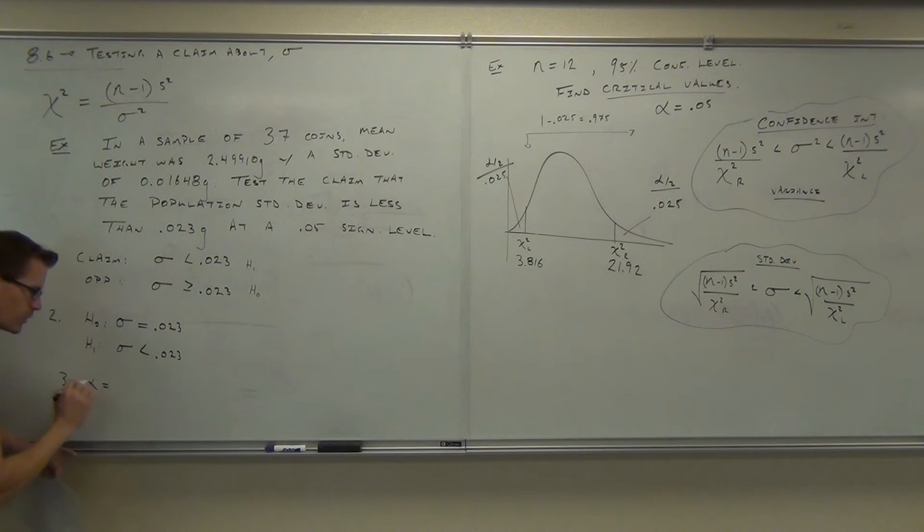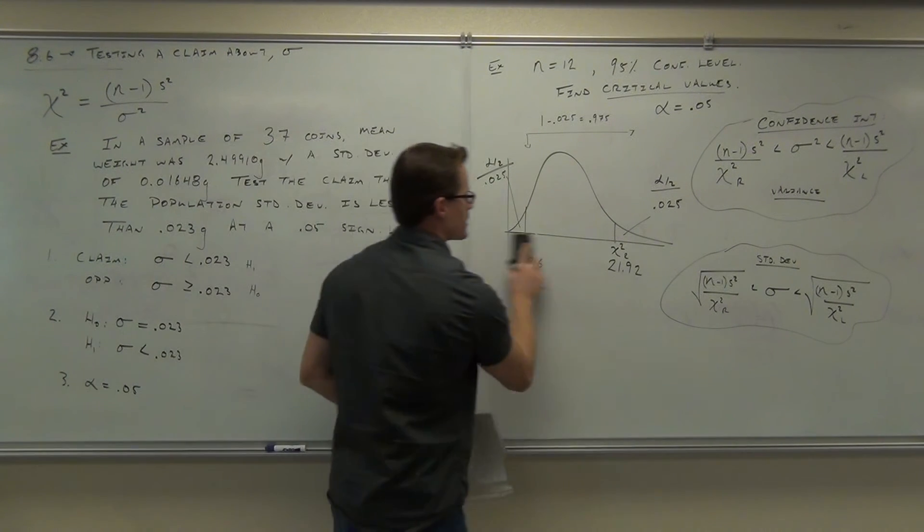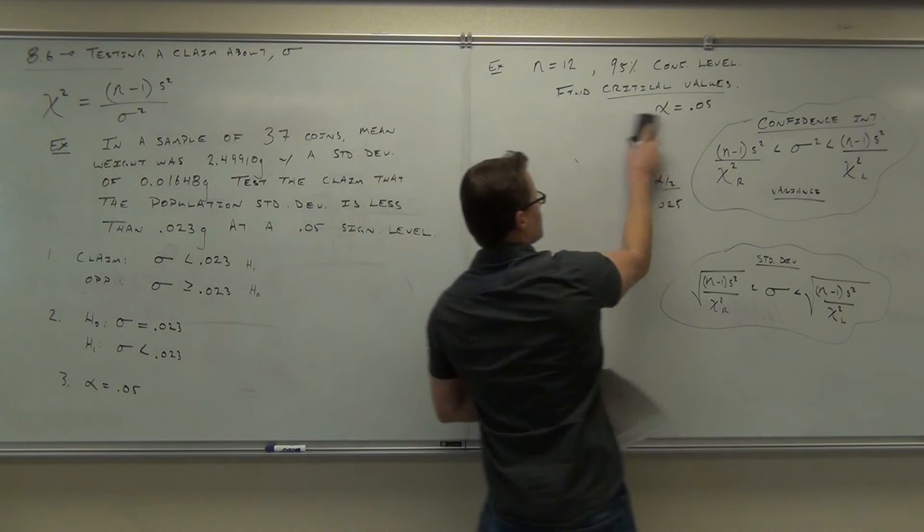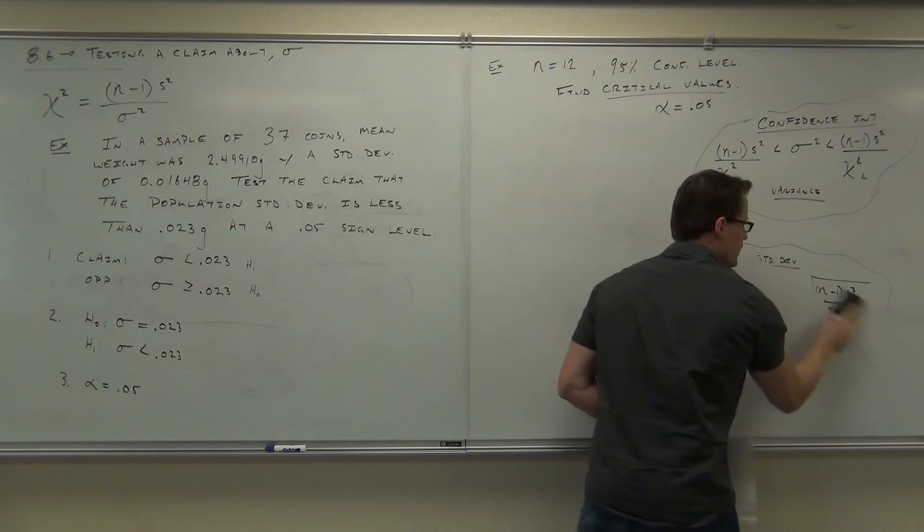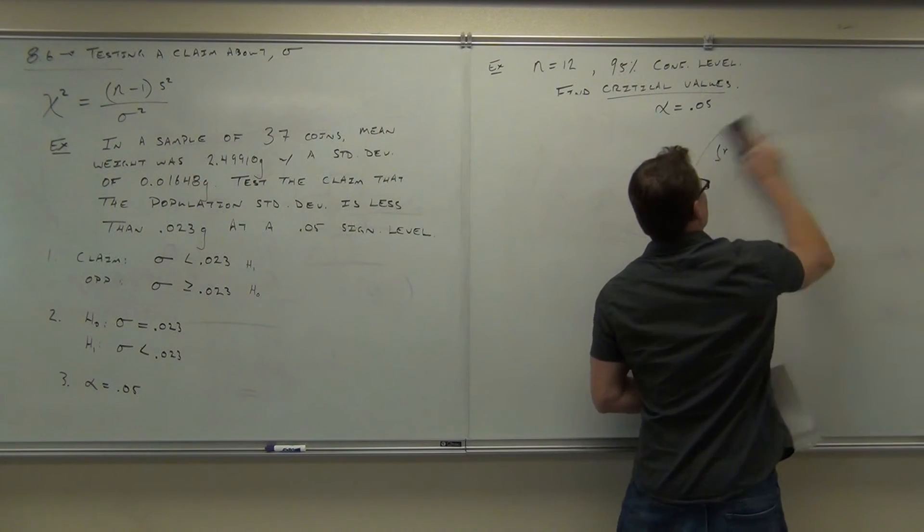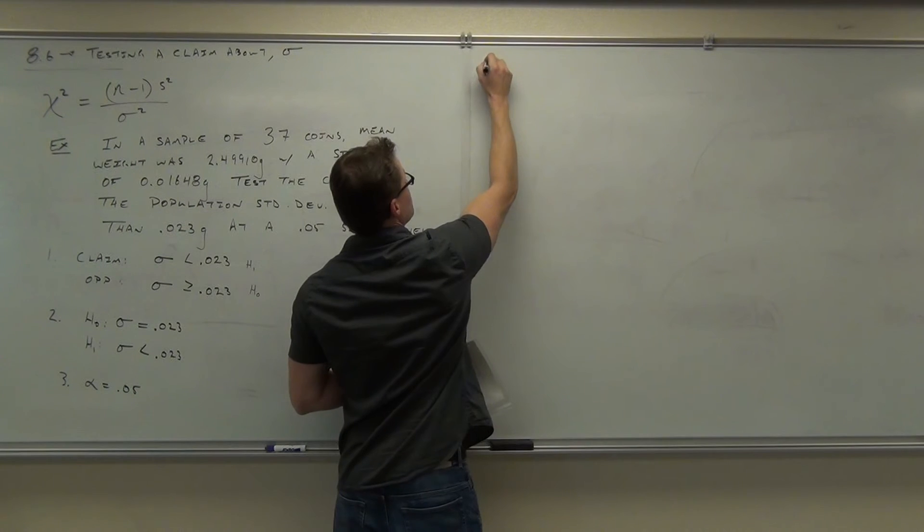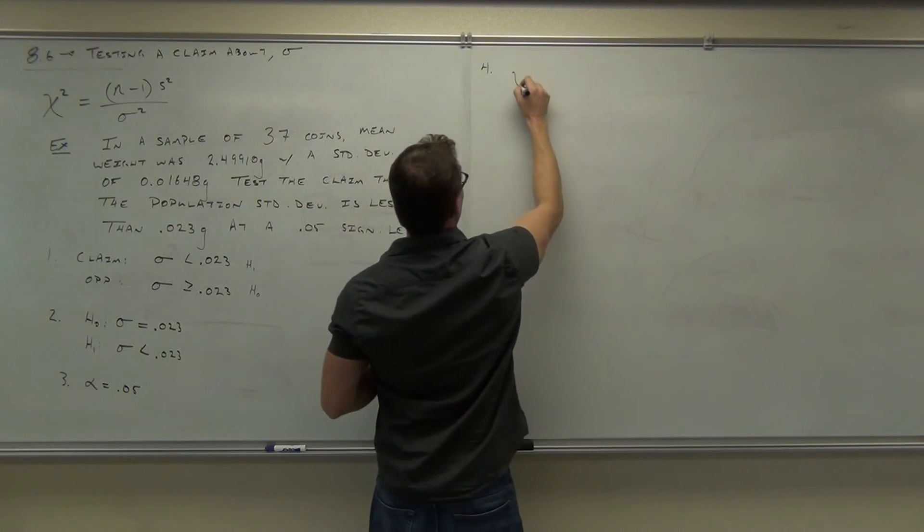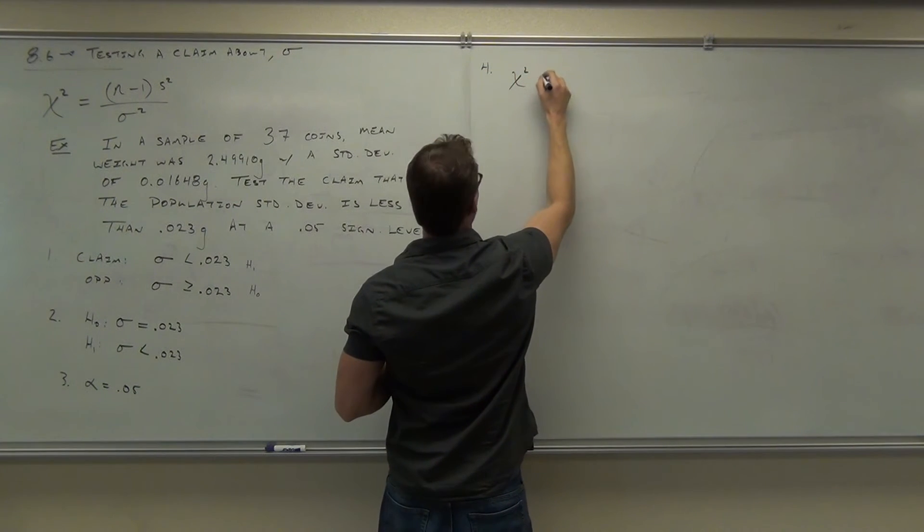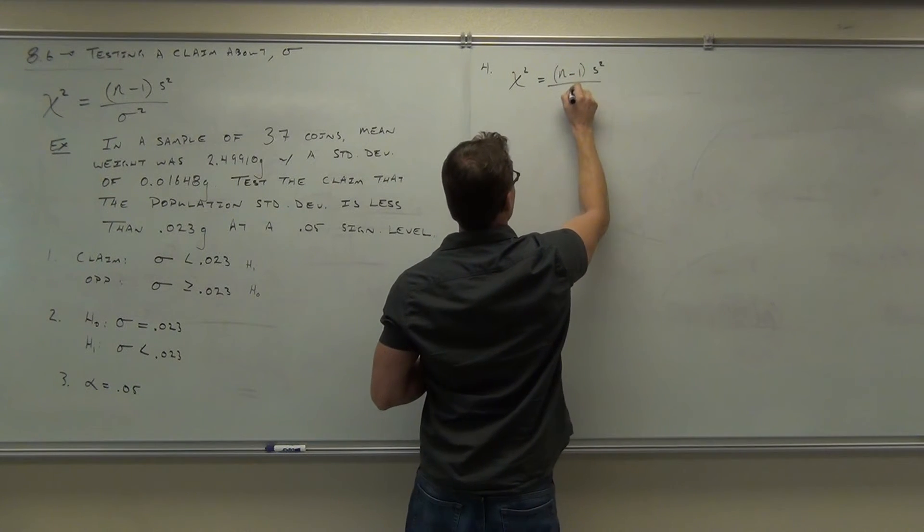Step three is your alpha. What is your alpha here, ladies and gentlemen? 0.05. Step number four is to calculate your test statistic. Now, there's no p-value method here. There's only the traditional method, which is kind of nice. We don't got to learn two ways anymore. Step number four says test statistic. It's on the board. You're going to do chi squared, n minus 1, s squared, sigma squared.